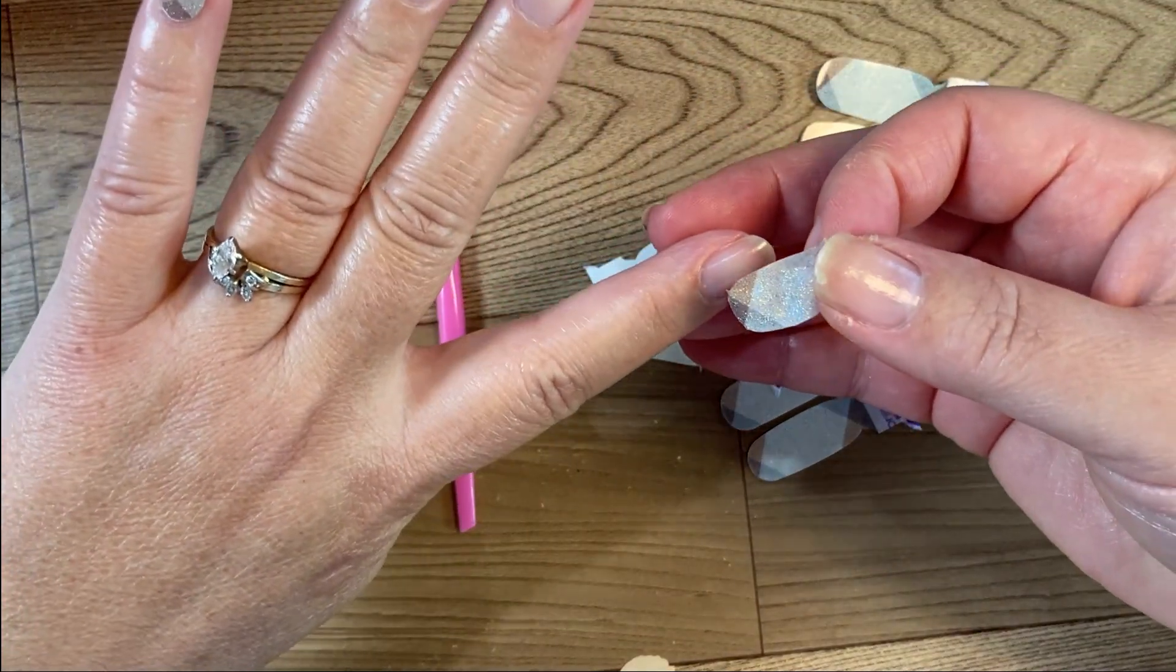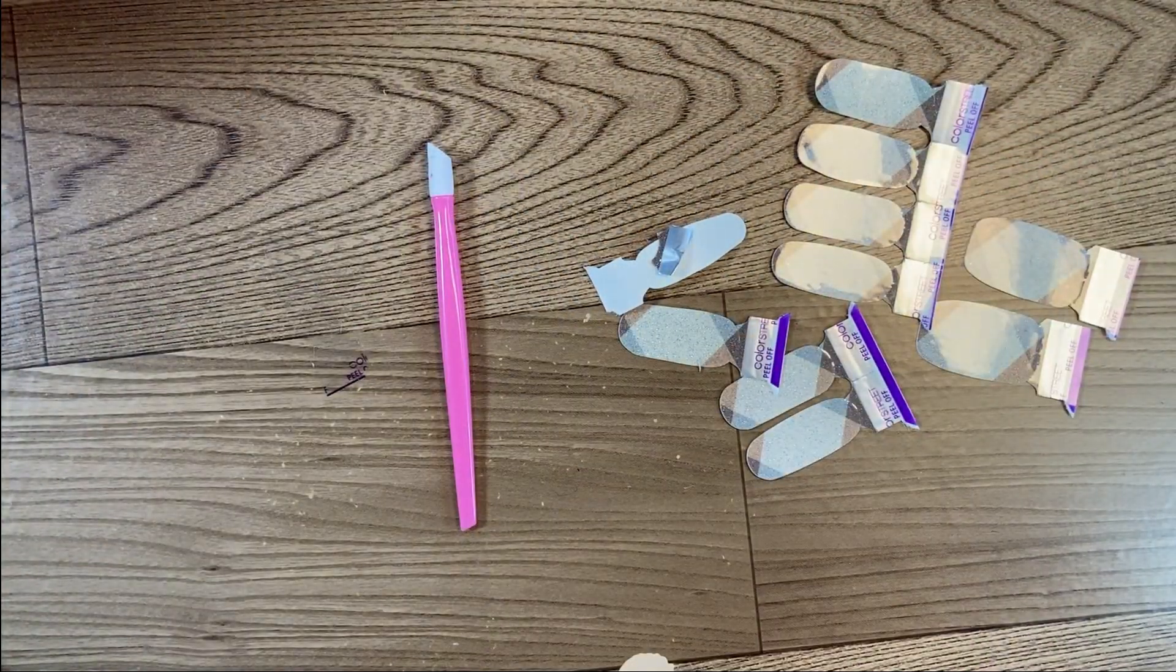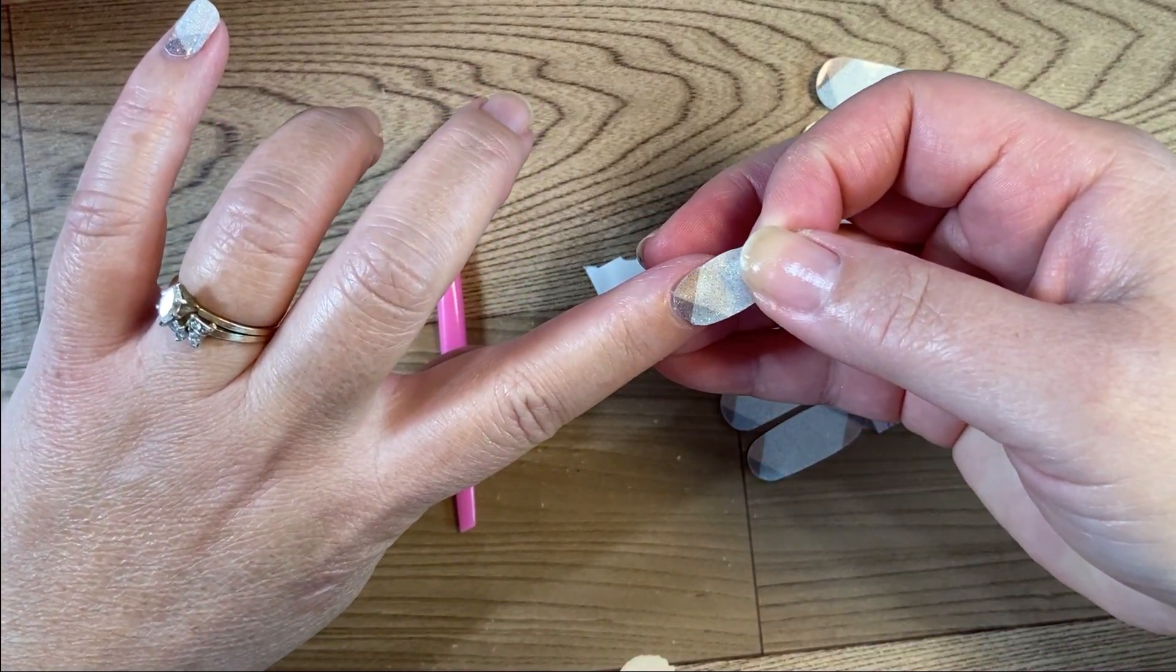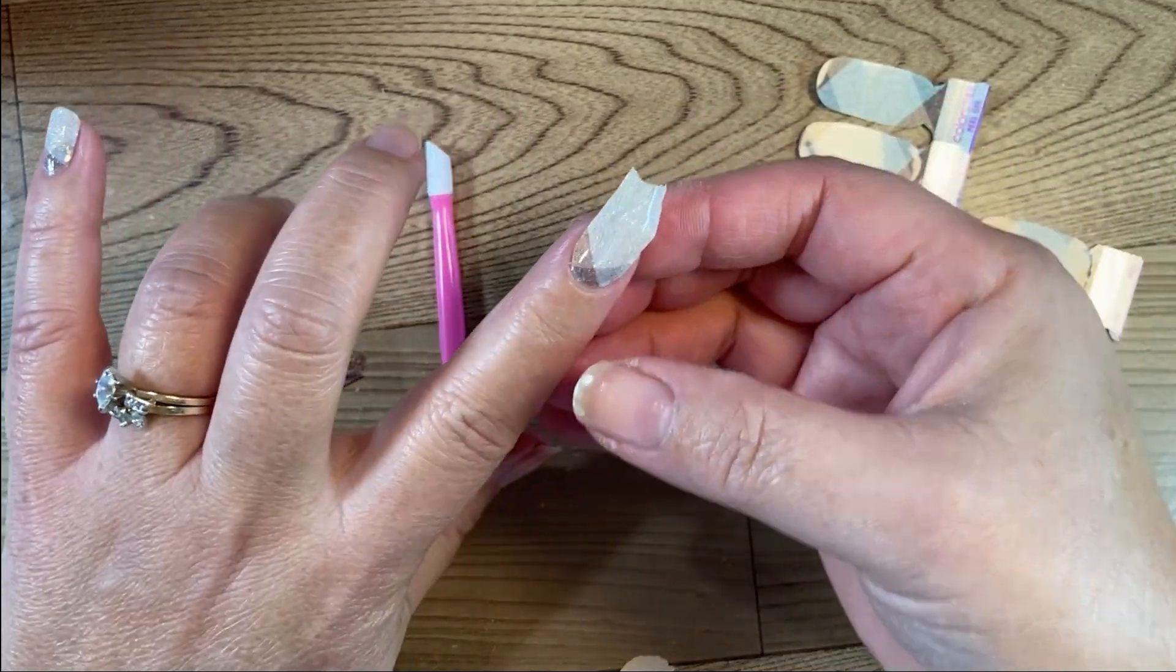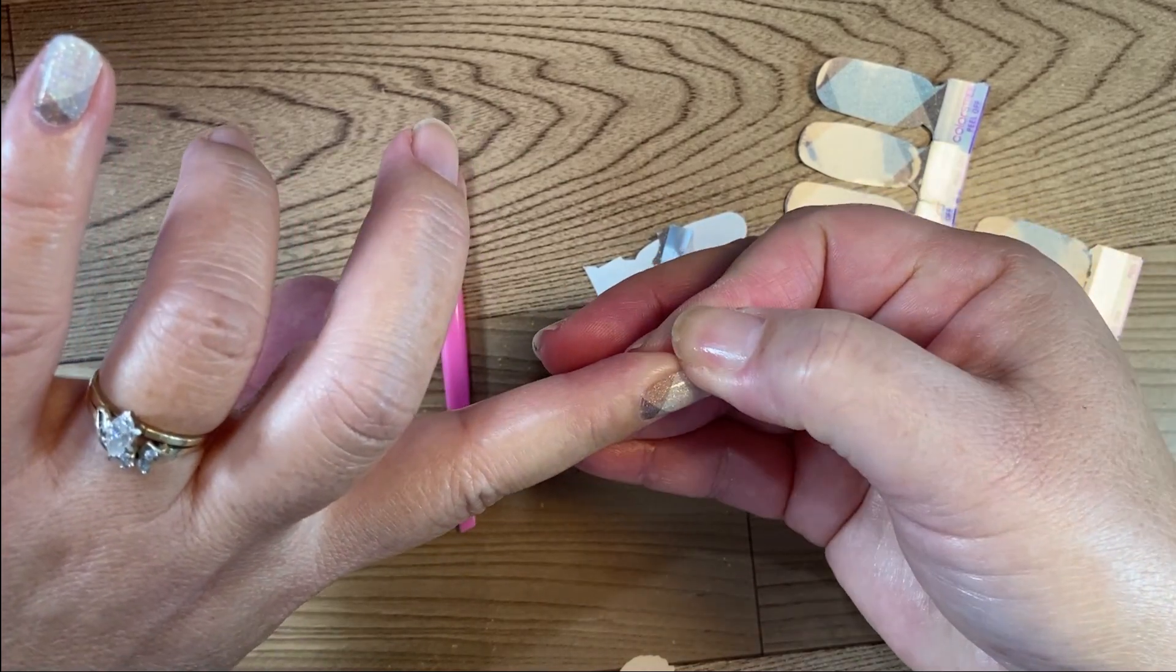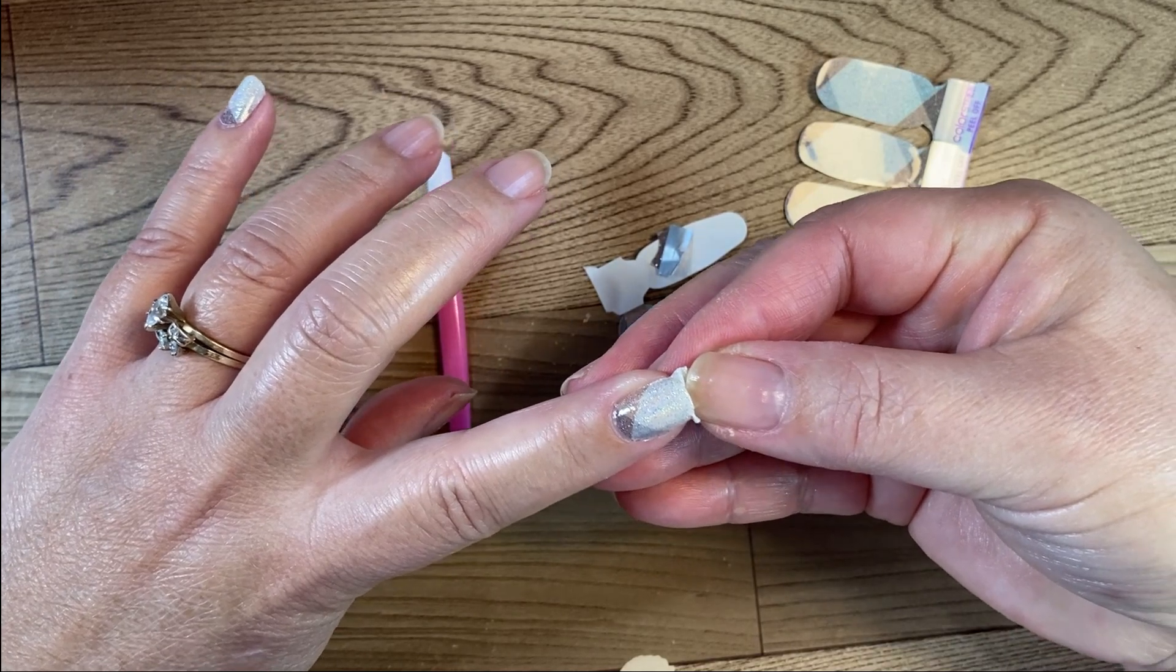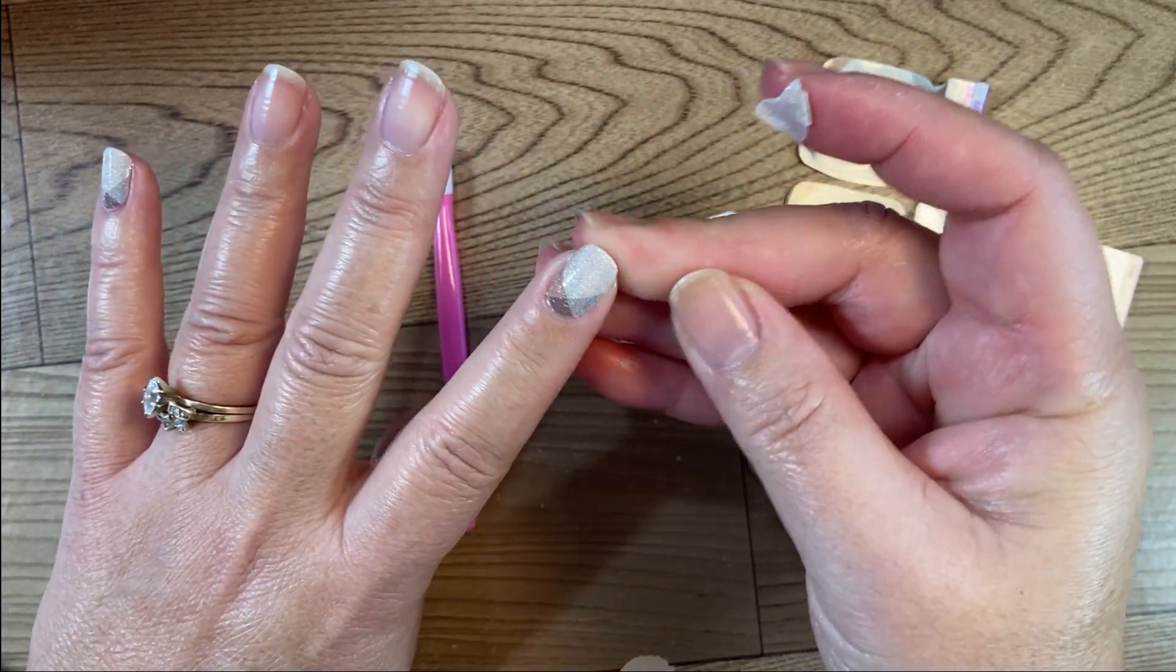And again, actually let me grab my cheater glasses just so that I can see my cuticle really well. All right, lining it up with my cuticle, press it down the middle, press down the side, give a little pull and press on that side. Again using my thumbnail as my tool, go under my pointer finger and perforate it off and wrap the rest around.